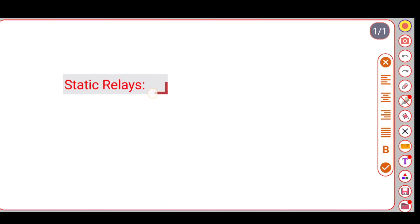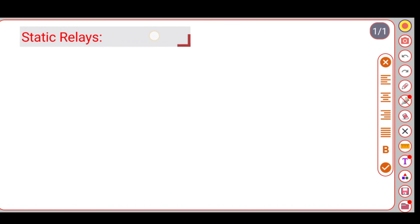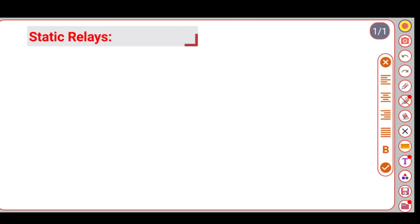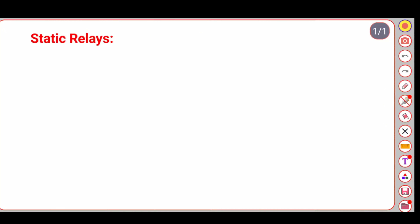Let us now go for static relays. In a static relay, the comparison or measurement of electrical quantity - not only current but impedance also - is performed by a static circuit. The static relay performs this measurement using a static circuit, which gives an output signal for the tripping of the circuit breaker.